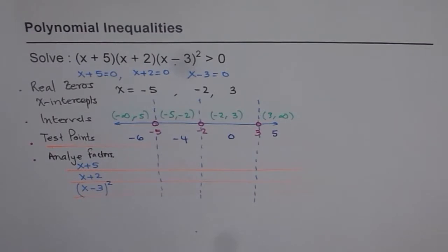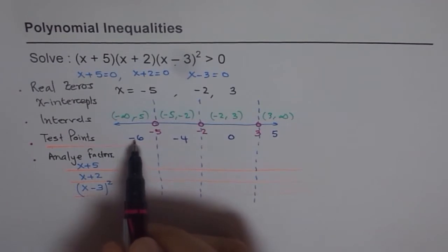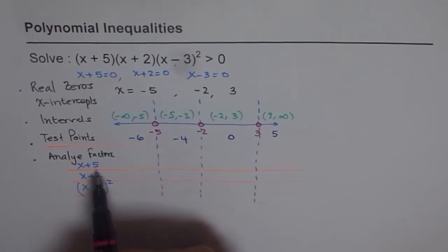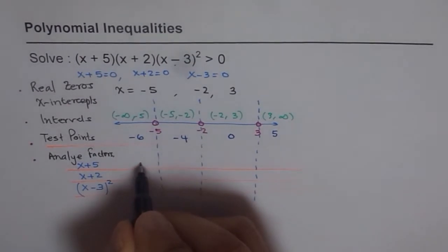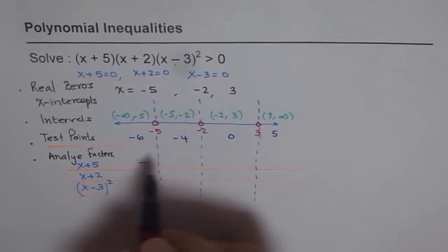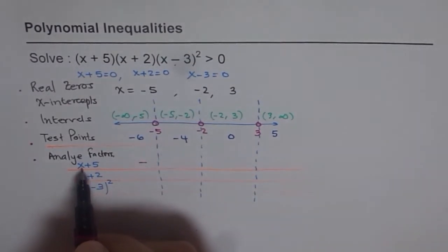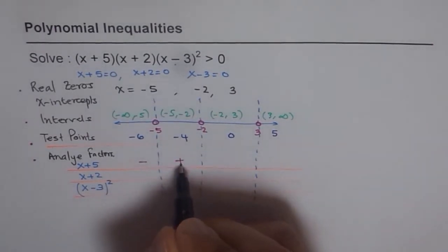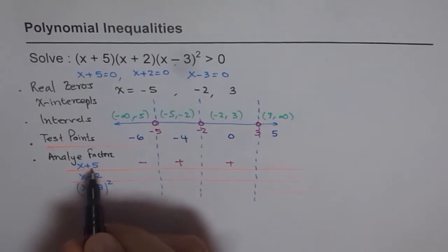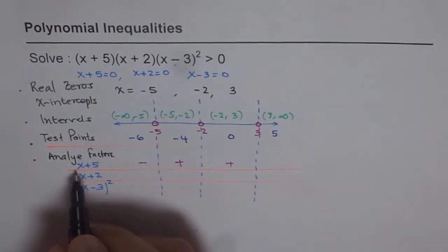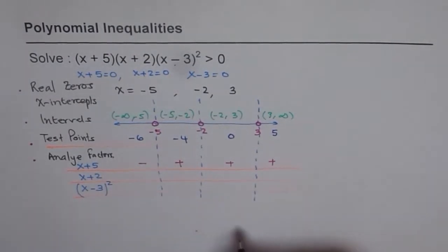So for example, in the very first factor, which is x plus 5, if I plug in minus 6, I get a negative value. We're not really interested in the number minus 1. We want to check the sign. So minus 6 plus 5 gives us negative number. So I can write negative here. But when I put minus 4 here, minus 4 plus 5 gives me a positive number. 0 for x will give me positive number 5. And if I plug in positive 5, 5 plus 5 is plus 10. So I'll just write plus here.